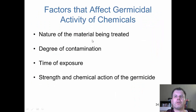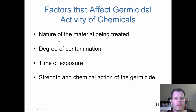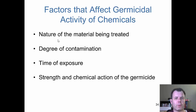The factors that affect chemical control are: the nature of the material, the degree of contamination, the time and exposure, and the strength of the chemical. These are the factors that affect how well the chemicals are going to work. We're doing something in the lab looking at chemicals — you picked four disinfectants and we're going to see how effective they are. If you've already done the lab, then you probably know which ones are effective and which ones aren't.